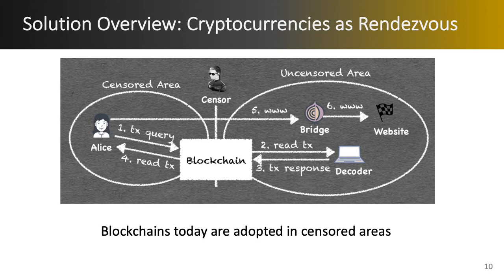In this scenario the rendezvous for requesting and retrieving the bootstrapping information is the blockchain of the cryptocurrency. In the first step the censored user sends a challenge transaction to the public blockchain, which contains a challenge message that can only be decoded by the decoder. In the second step the decoder scans the transactions in the blocks and decodes them to see if there is a message intended for it. Next it sends the corresponding response as an encoded transaction to the blockchain. In step four the user looks for the specific transaction, decodes it, and obtains the response message. Finally, using this bootstrapping information, it can connect to the bridge and from the bridge to the website.